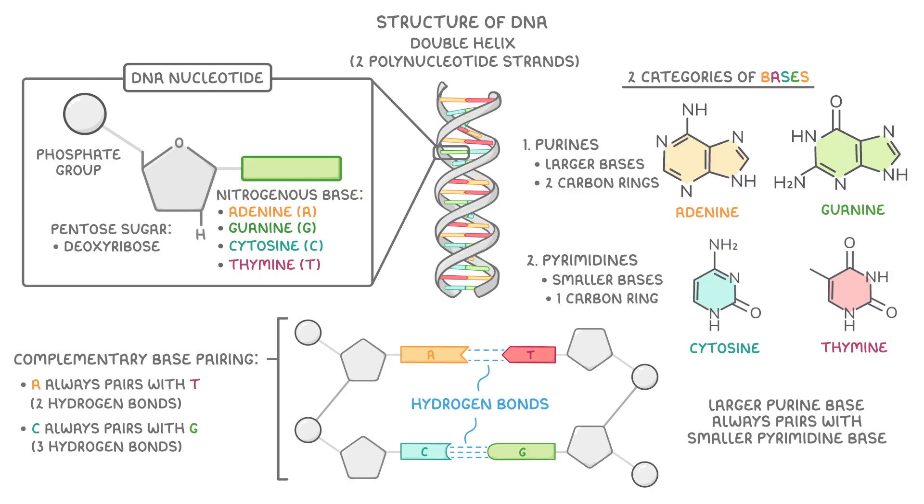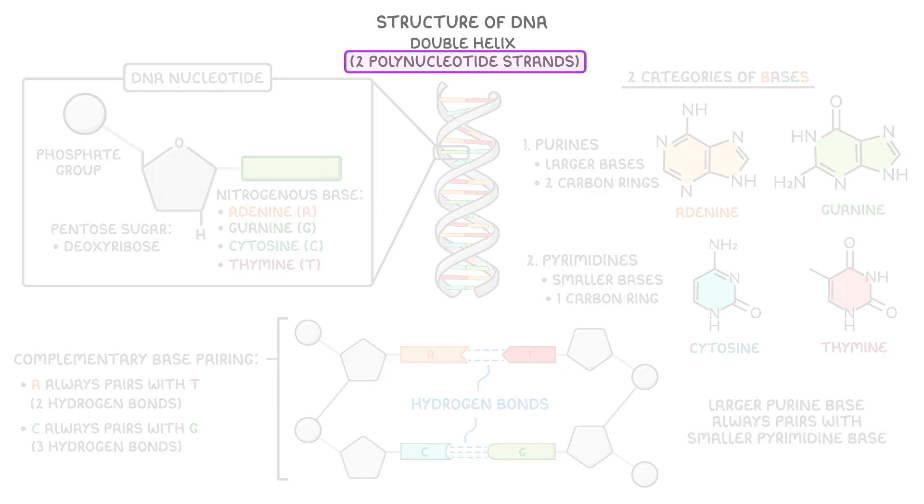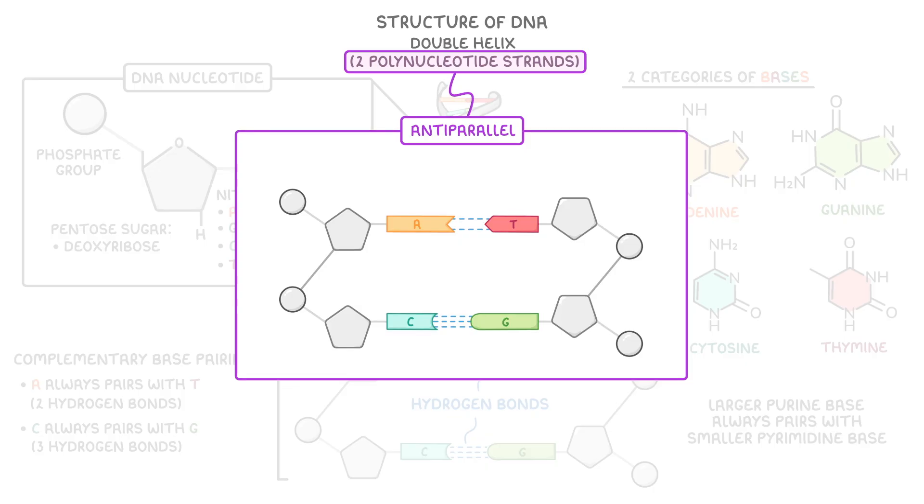An important thing to note here is that we describe the two strands in a DNA molecule as being anti-parallel. This basically means that they run in opposite directions. So while this strand on the left runs from top to bottom, the other strand runs from bottom to top, so the nucleotides are effectively flipped upside down relative to the left strand.